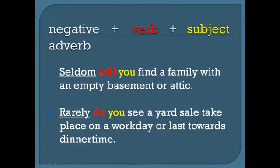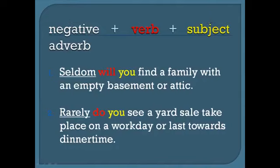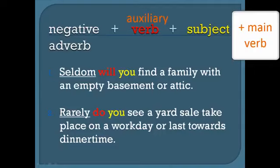Both sentences follow this pattern: negative adverb, verb, subject. But the verb highlighted in red is not the main verb — it's the helping verb, also known as the auxiliary verb. So we have: negative adverb, auxiliary verb, subject, and then the main verb.